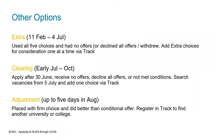In terms of other options: UCAS Extra falls between the 11th of February and the 4th of July — if you've used all five choices and had no offers or drastically changed what you're looking at, you can apply through UCAS Extra for one final choice. Clearing is after the 30th of June — if you've received no offers, declined all offers, or not met your conditions, you can look for clearing places. An adjustment would be where you're placed with a firm choice but you did better than expected, so you want to find a university at higher entry levels than you originally thought you'd achieve.